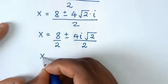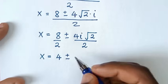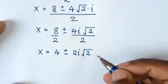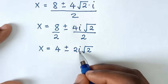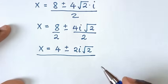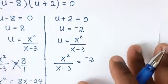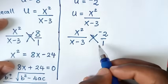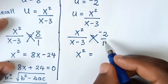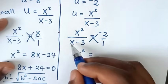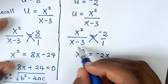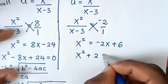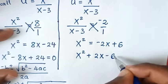These are two complex solutions because they contain imaginary number i. Now let's solve from the second solution: u equals negative 2. We write negative 2 as negative 2 over 1 and cross multiply x square over x minus 3 equals negative 2. This gives x square equals negative 2 times x minus 3, so negative 2 times x is negative 2x, and negative 2 times negative 3 is positive 6. Rearranging: x square plus 2x minus 6 equals 0.